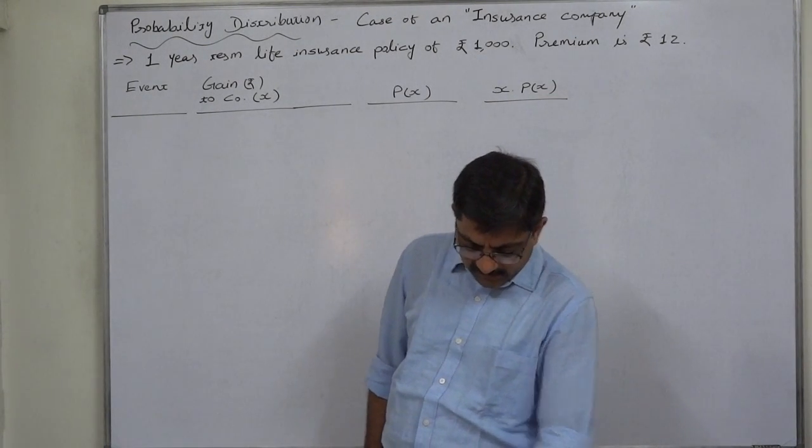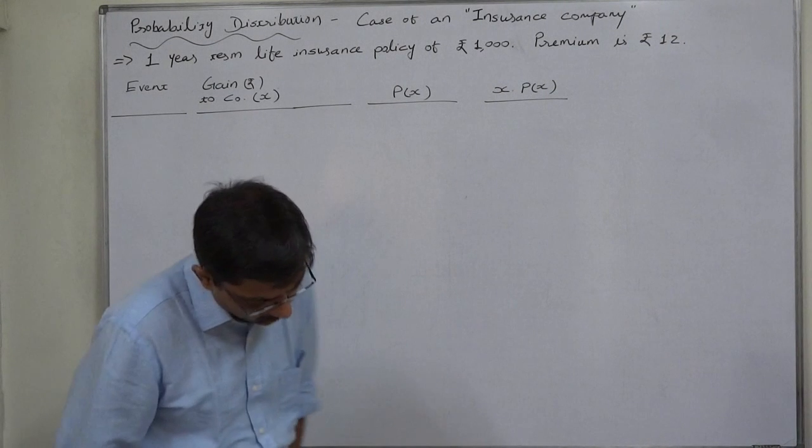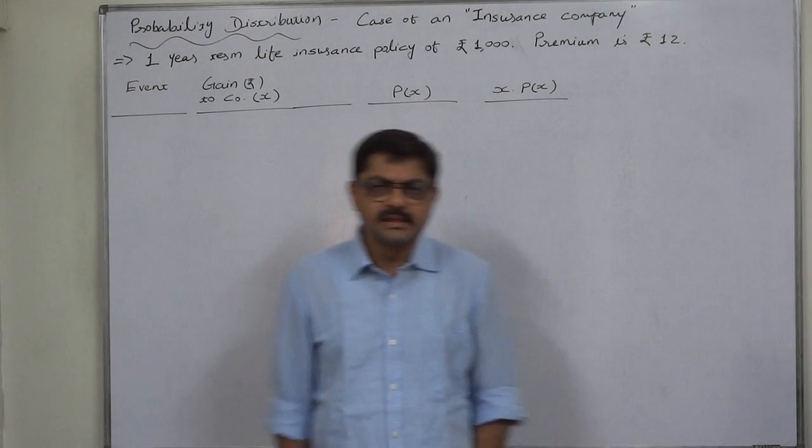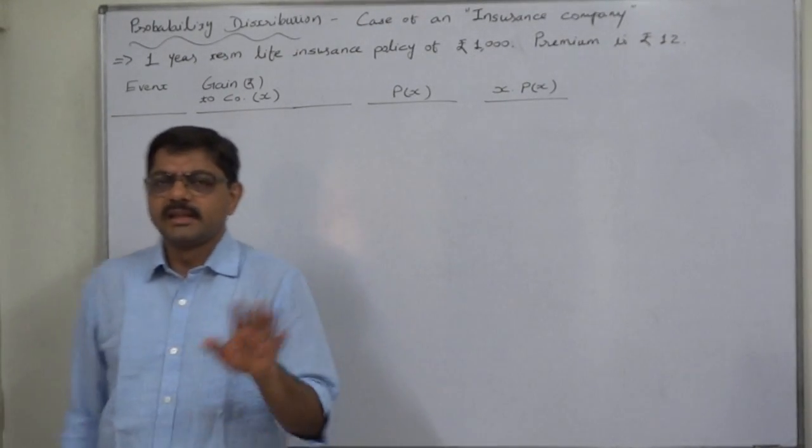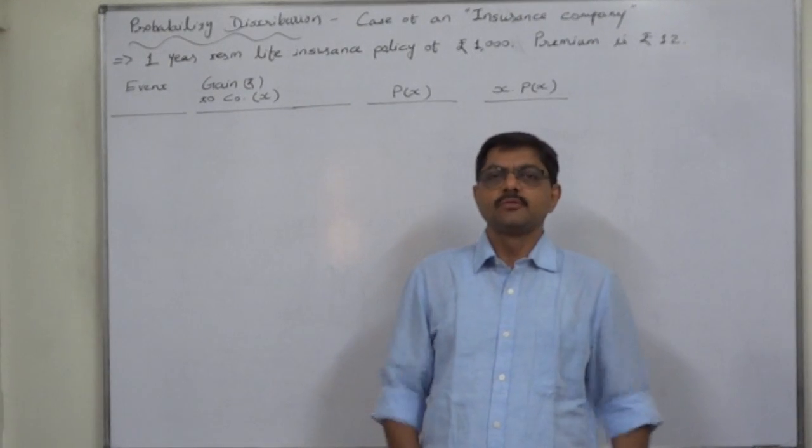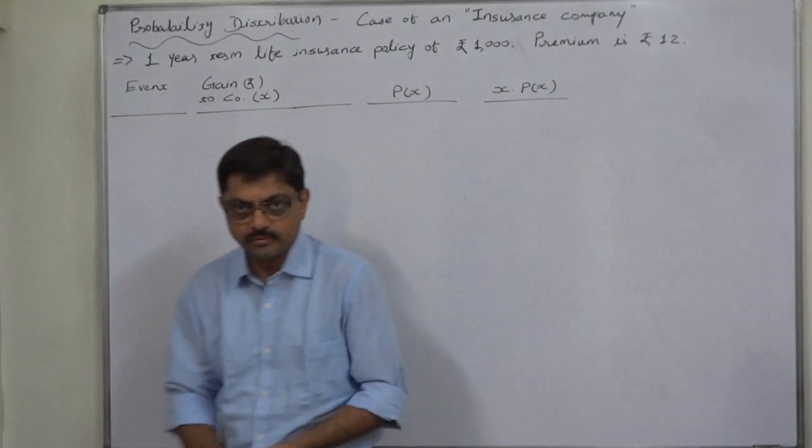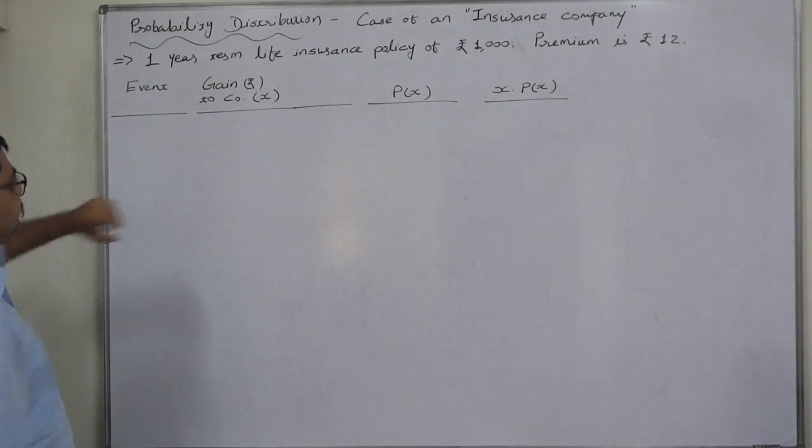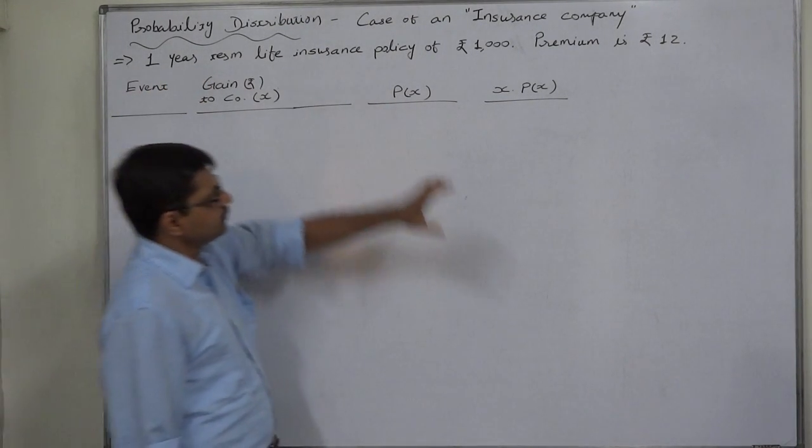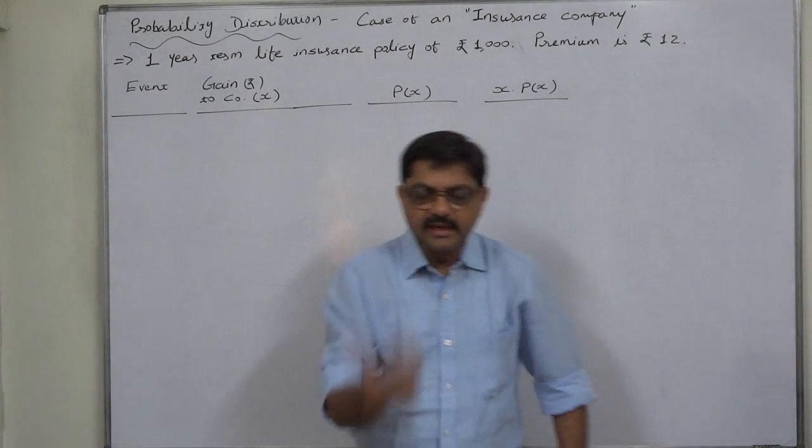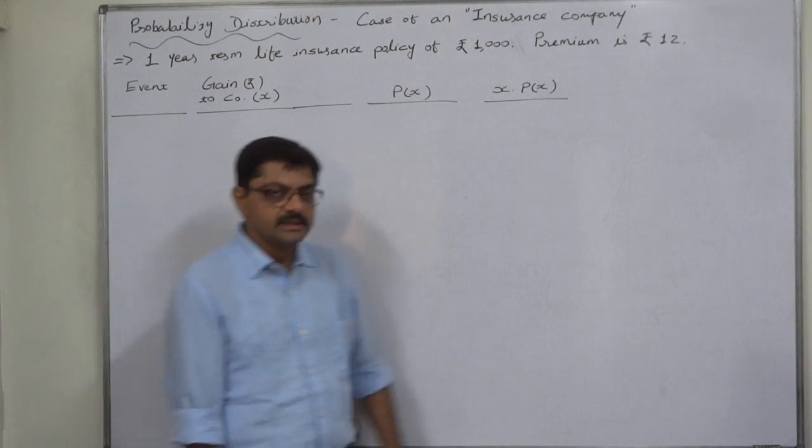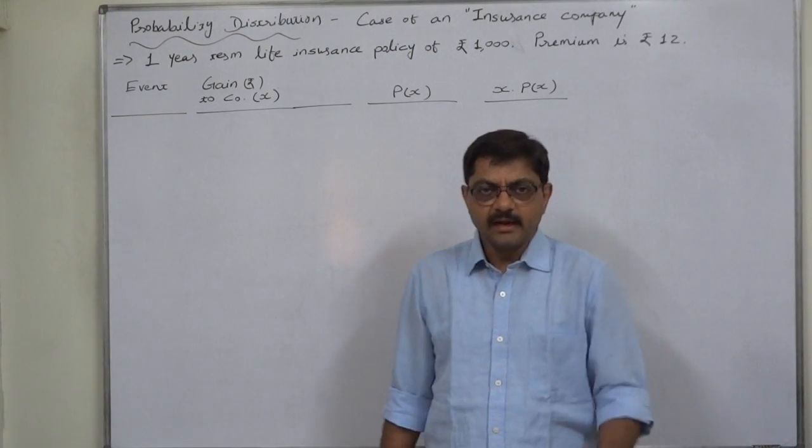What is the expected gain for insurance company on a policy of this type? This is a very simple case. Life insurance business or accounting of life insurance business is not that much easy, but we want to study the case with respect to probability distribution. What exactly can happen? Suppose insurance company sells a one year insurance policy of rupees 1000 and in the inception, the company takes rupees 12 as premium.